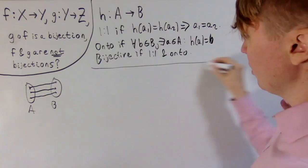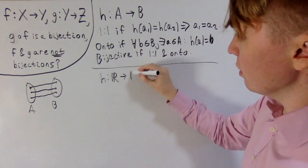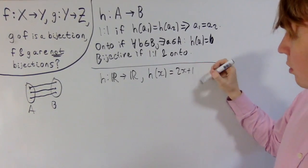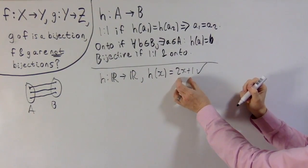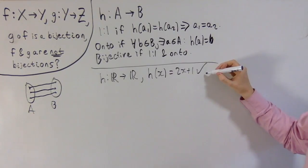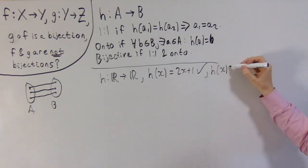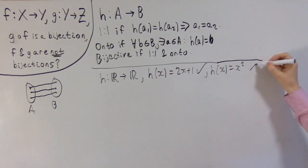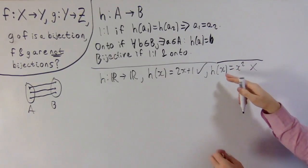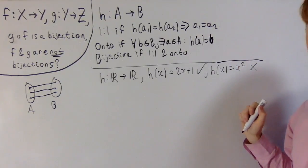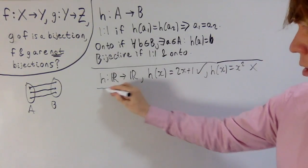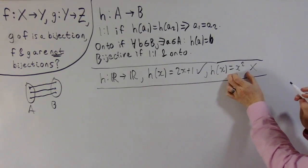Some examples: say you've got h mapping from the reals to the reals, so h of x equals 2x plus 1. This would work because each x maps to a unique point, and you can fill up your codomain — you can get any real number as an output. But something that wouldn't work: say h of x equals x squared. This wouldn't be a bijection because you can't get every single real number as output. Also, different points in the reals map to the same point — for example, 1 and minus 1, when you square those, give the same output.